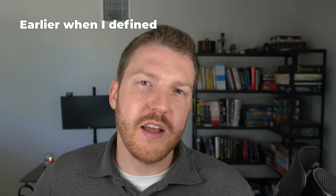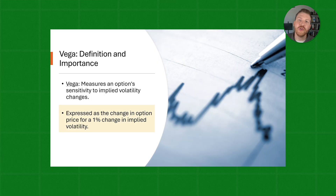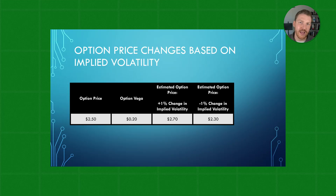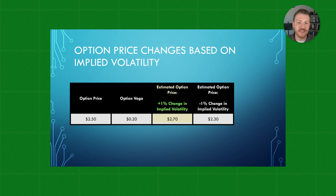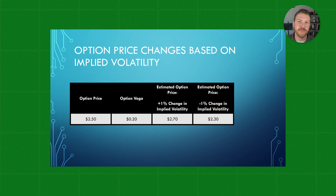Vega is often expressed as the change in an option's price for a 1% change in the implied volatility of the underlying stock. For example, if we have an option with an original price of $2.50 and the option has a vega of 20 cents, the new estimated option price will be $2.70 if there is a +1% increase in implied volatility, whereas a -1% decrease in implied volatility would give an estimated new option price of $2.30.